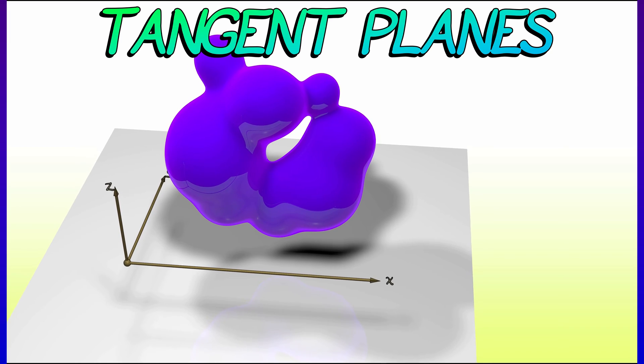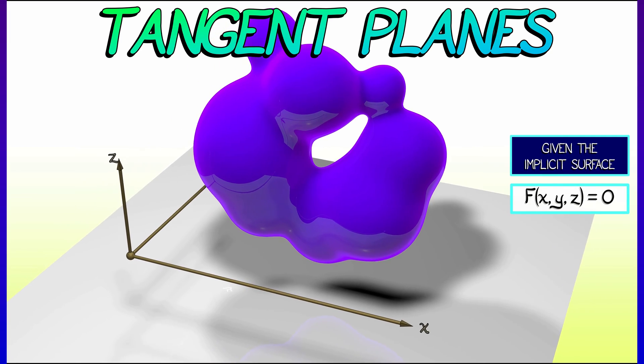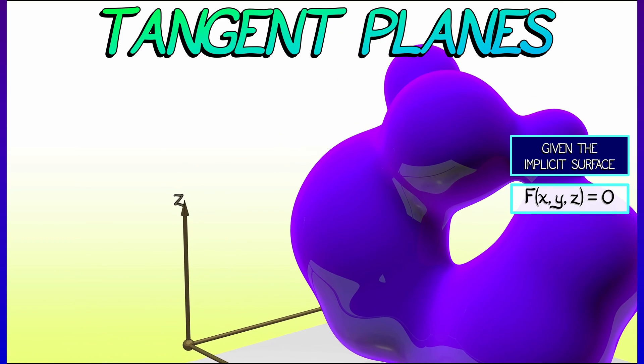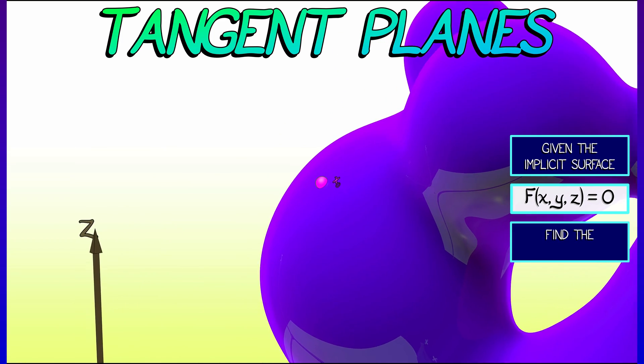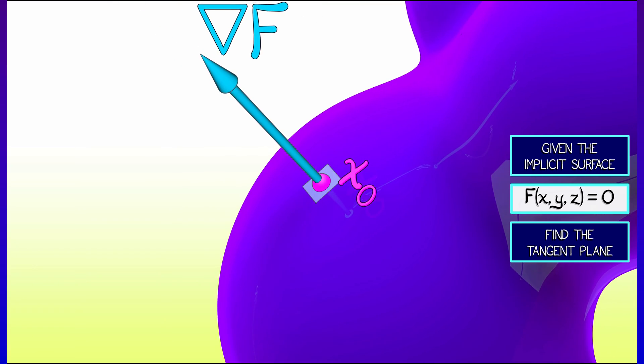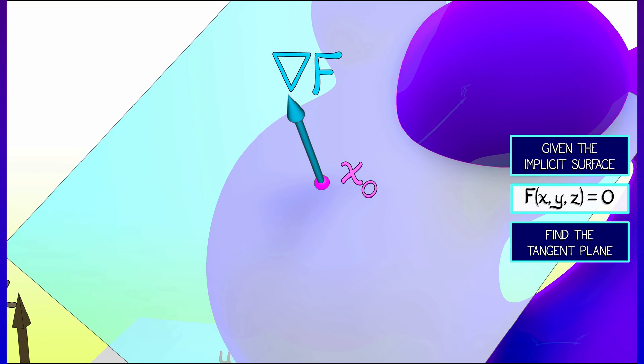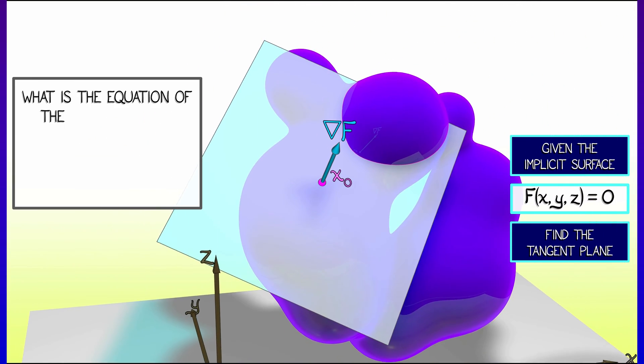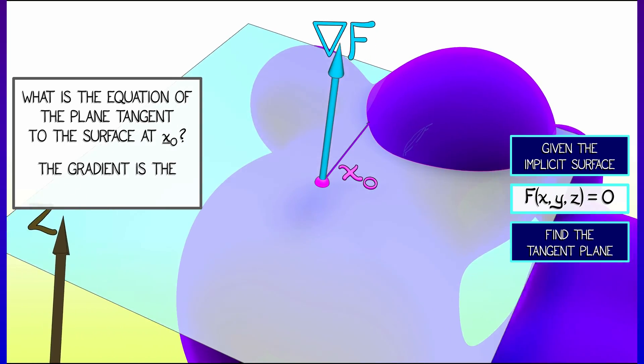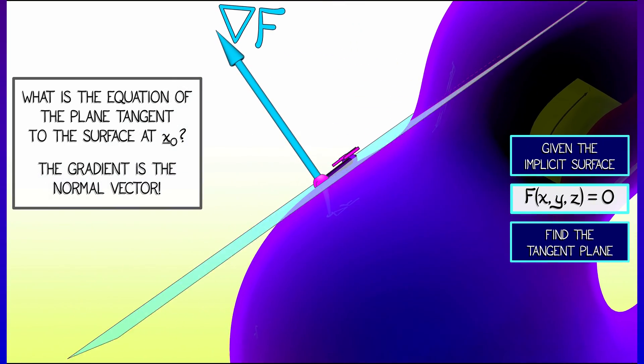Let's say that you've got an implicit surface in 3D, given as the level set of an equation f of x, y, z equals zero. How do you find the tangent plane at a particular point? Let's call it x-naught. Well, since the gradient, grad f, is a vector that is orthogonal to that implicit surface, we can use that information to define a tangent plane.